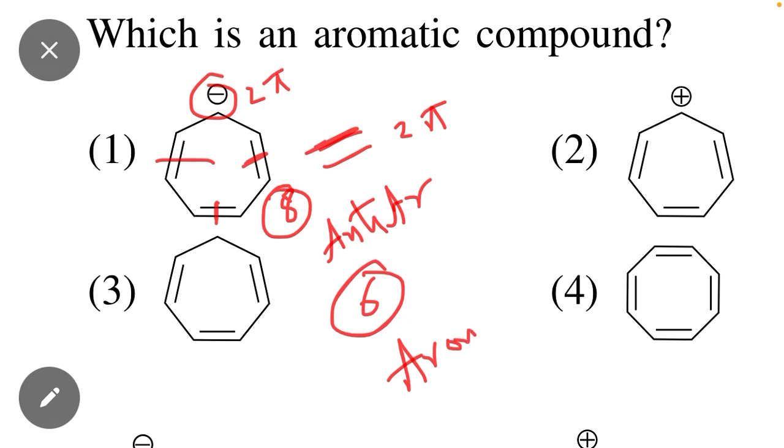Now we will check the second option. As you can see that two electrons, two electrons, and two electrons. There are total six electrons, but positive charge is not counted. There are six pi electrons.